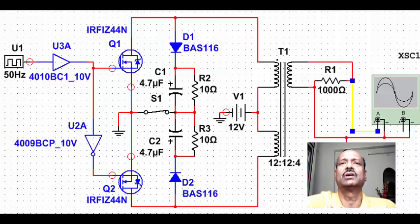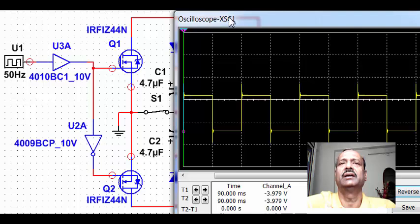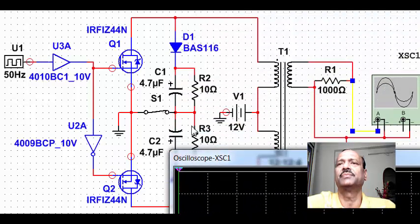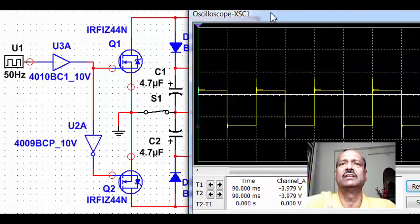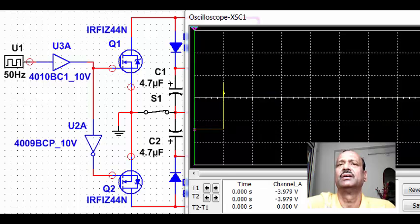Now, we will switch on a CRO or a cathode ray oscilloscope and what we have done, we have taken the output from the transformer and then we will see how it behaves while we switch on. Now, we switch on this, you find this is the kind of waveform that we get.